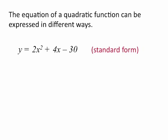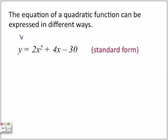The following, y is equal to 2x squared plus 4x minus 30. This is what we call standard form. Standard form means that we have our equation as follows, where y is equal to ax squared plus some bx value plus some constant.